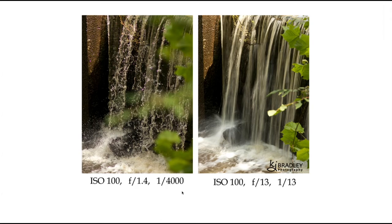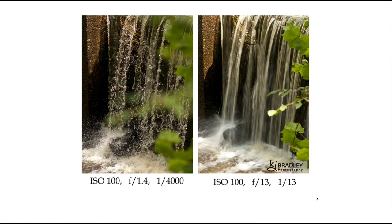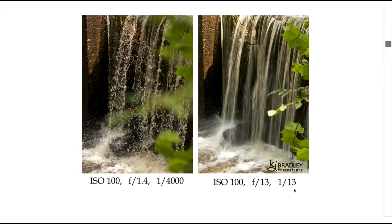1/4000th of a second means if you took one second, divided it into four thousand pieces, and the shutter opens for just one of those pieces. On the other side, we've slowed the shutter speed to 1/13th of a second and changed the aperture to f/13 to let less light in and balance the exposure. With a slower shutter speed it creates this flowy water look, which is very popular with landscape photographers.